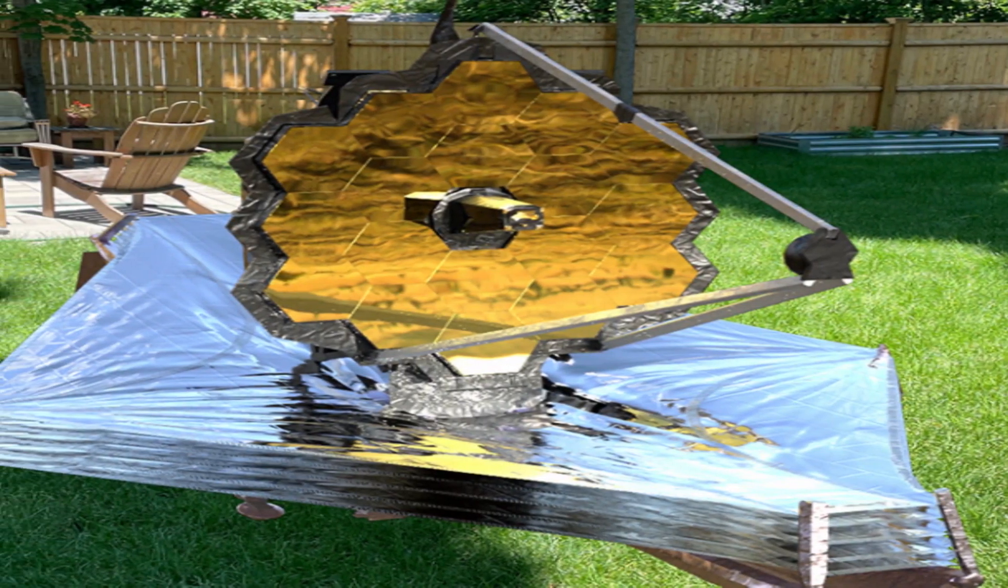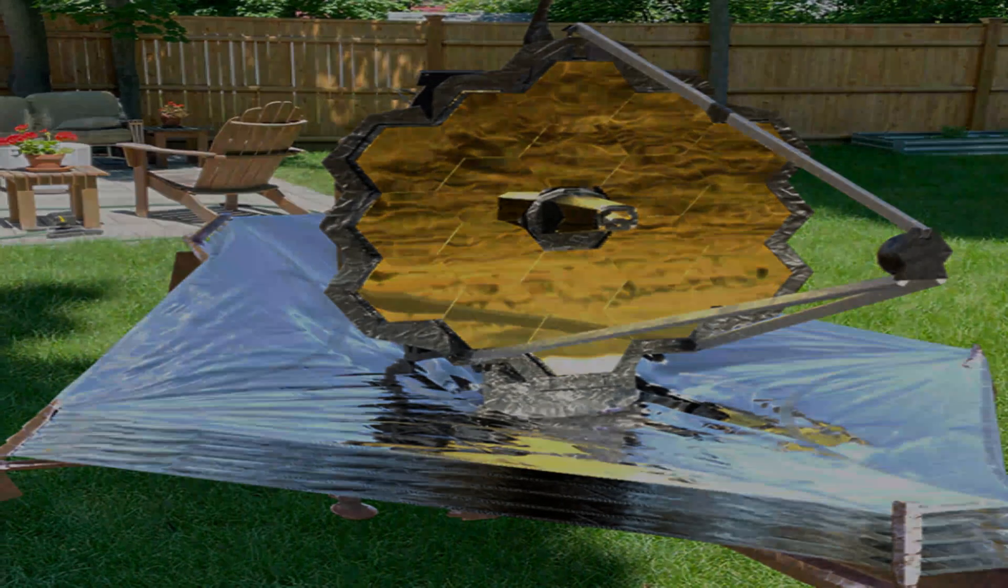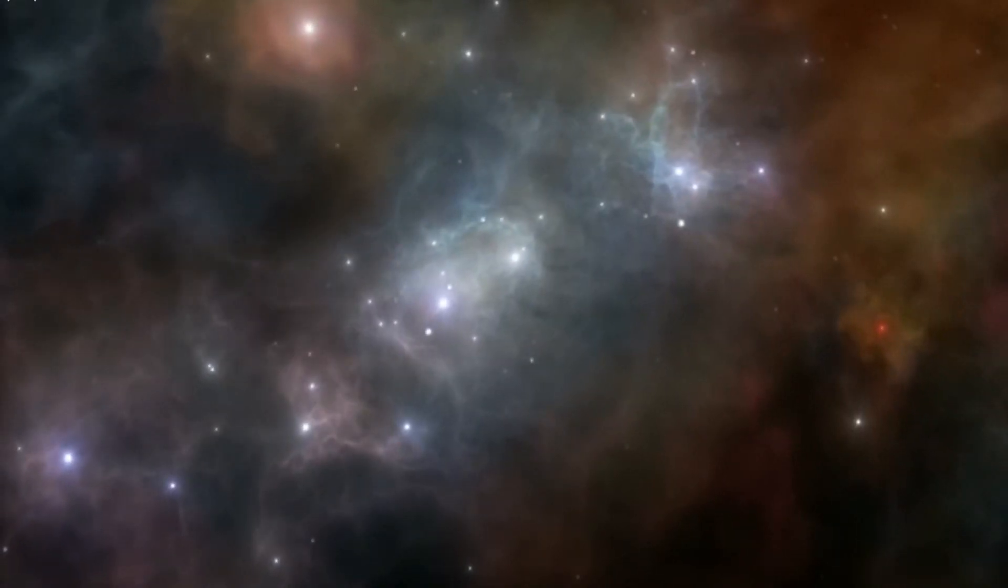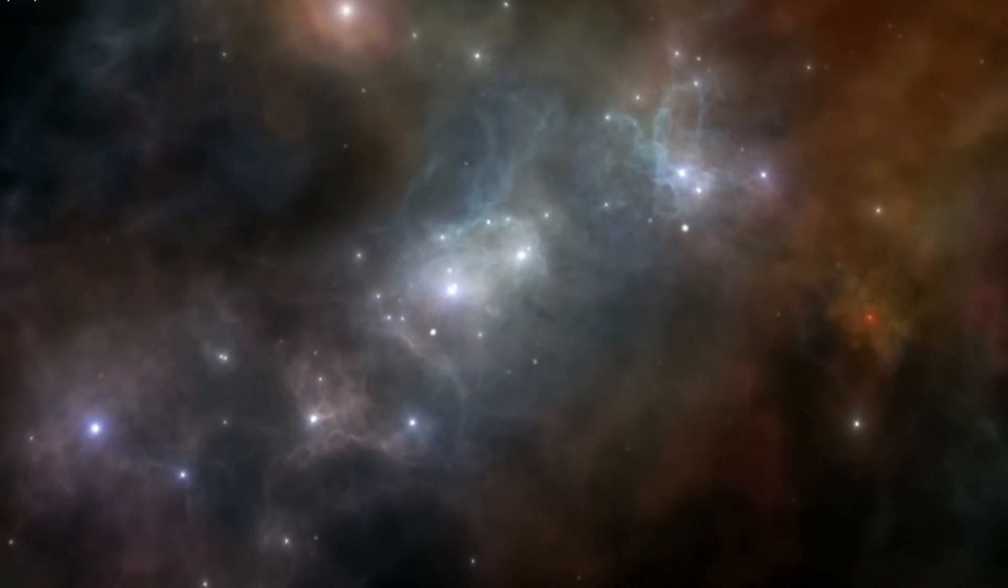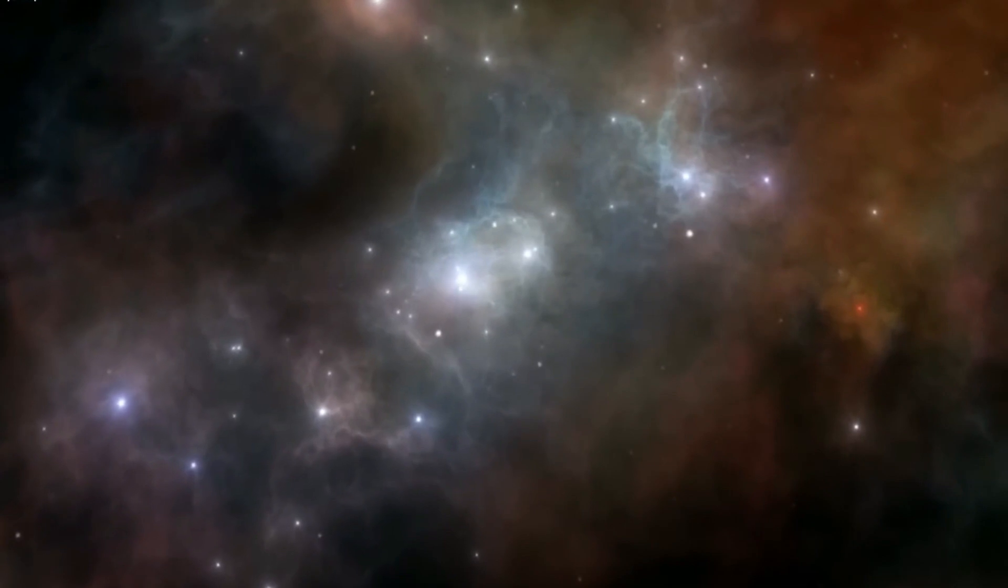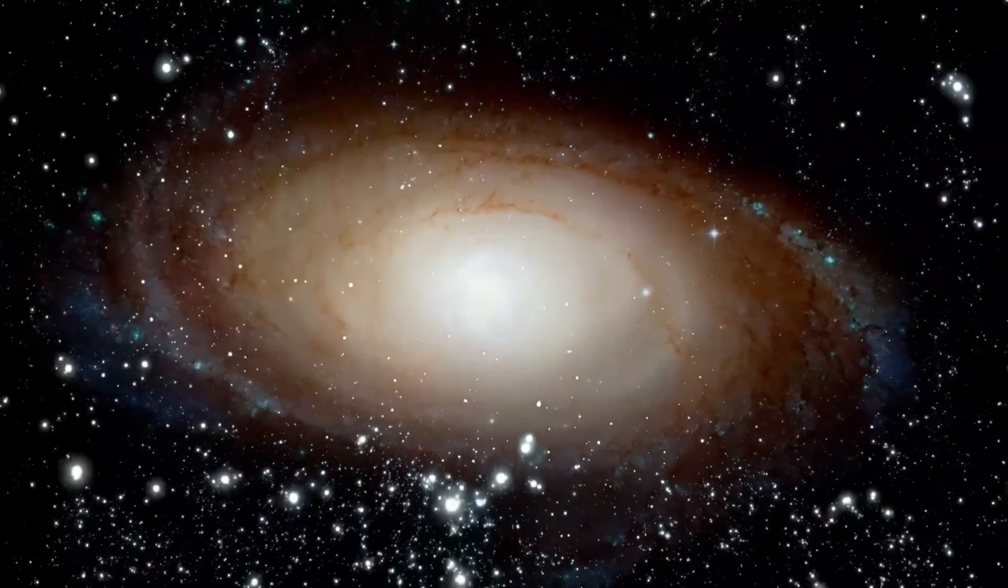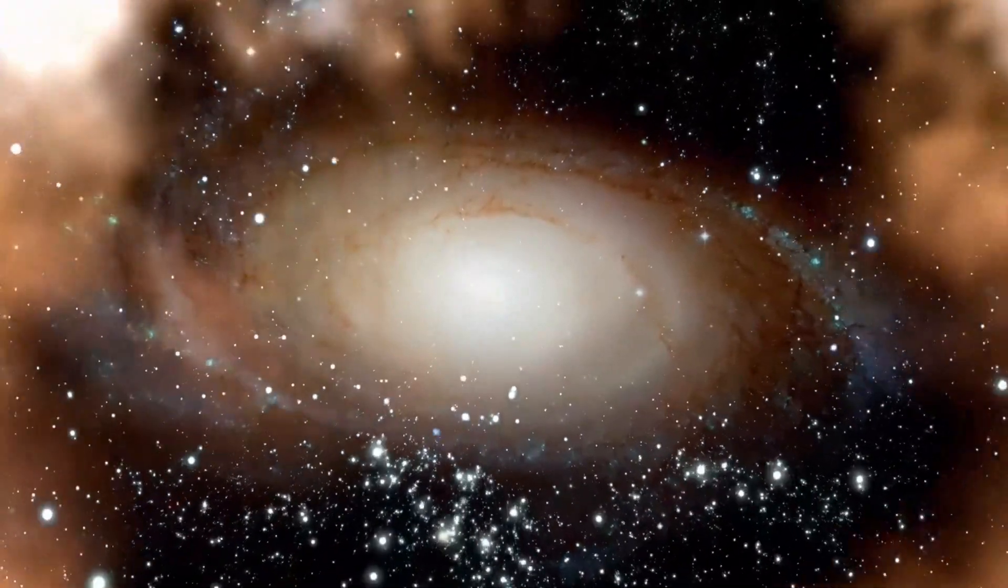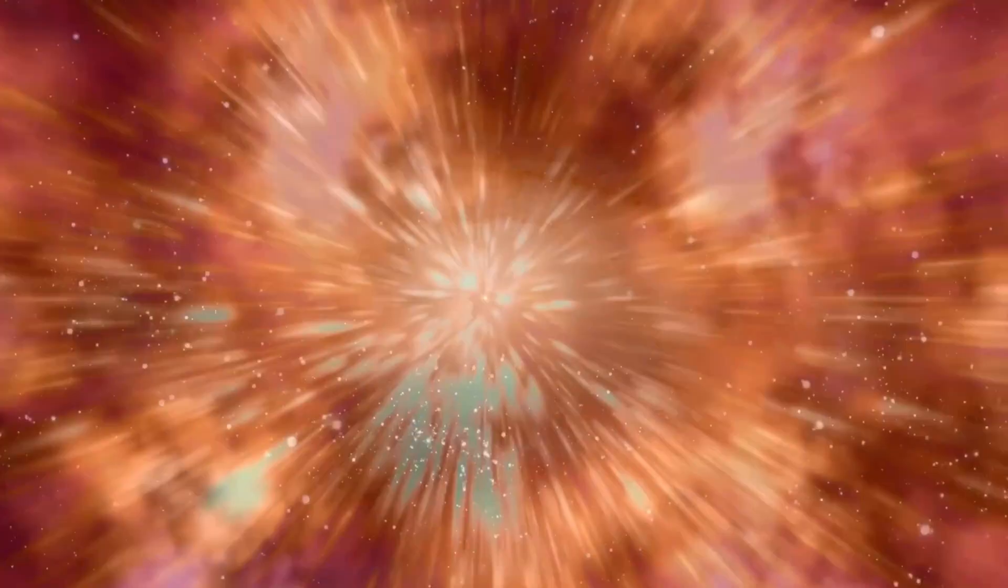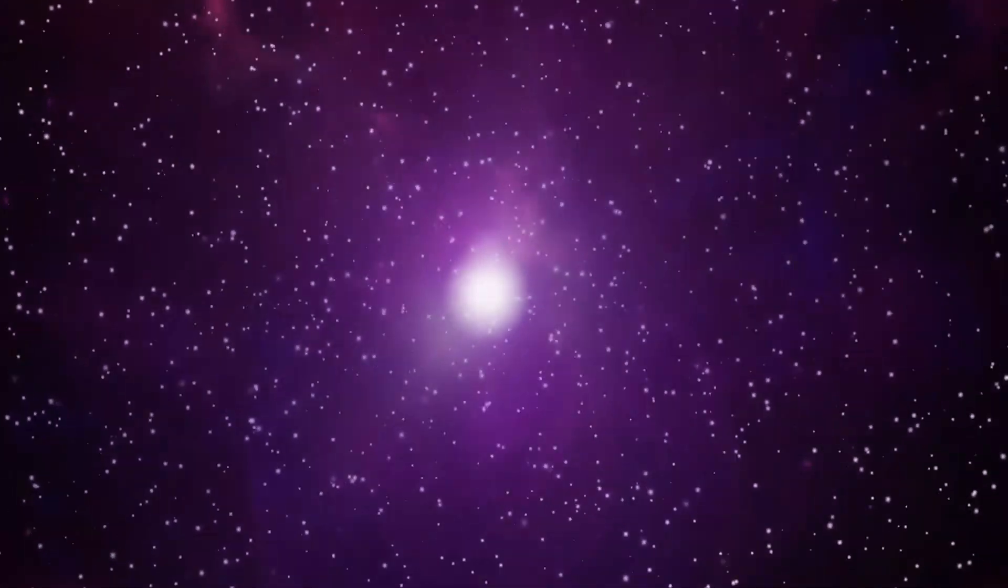Redshifts observed in distant galaxies in the James Webb Space Telescope images have also presented a challenge to the expanding universe hypothesis of the Big Bang theory. Redshifts refer to the phenomenon where light from distant objects appears to shift towards the red end of the spectrum due to the universe's expansion. However, the redshifts observed in these galaxies are much greater than predicted, casting doubt on the theory's assumptions about the expansion rate.